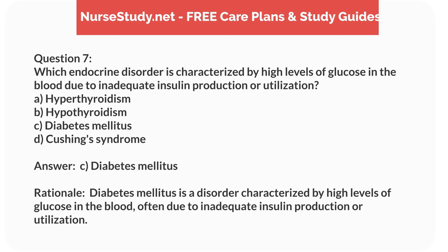Answer: C. Diabetes mellitus. Rationale: Diabetes mellitus is a disorder characterized by high levels of glucose in the blood, often due to inadequate insulin production or utilization.